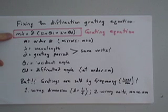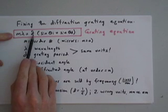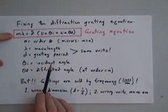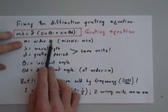First, what is the grating equation? m lambda equals d times quantity sin theta i plus sin theta d, where m is the order number.